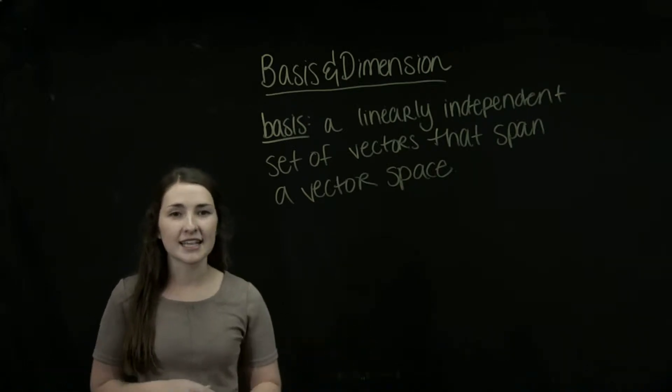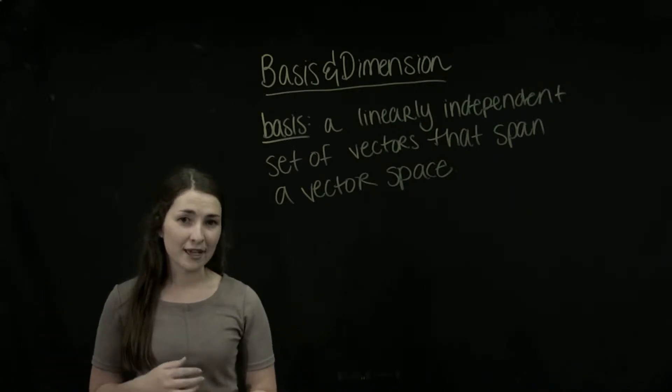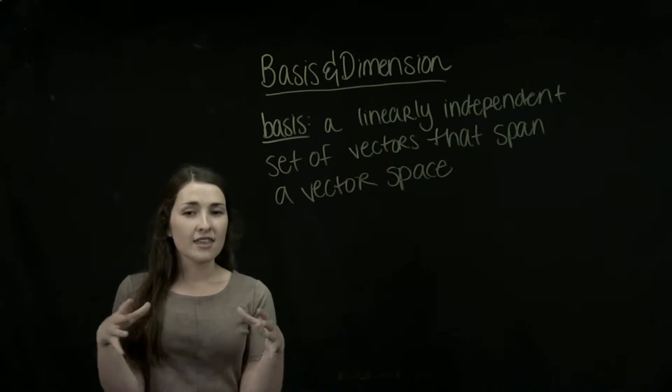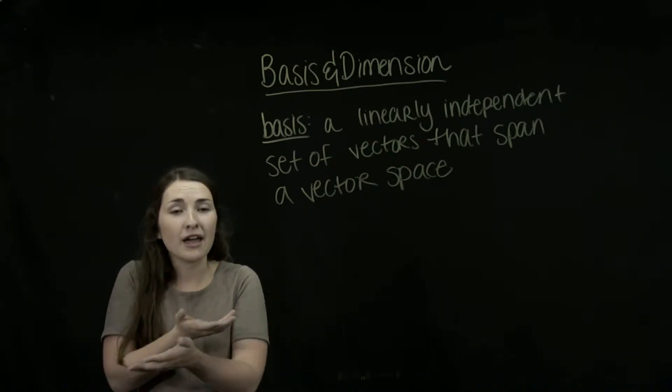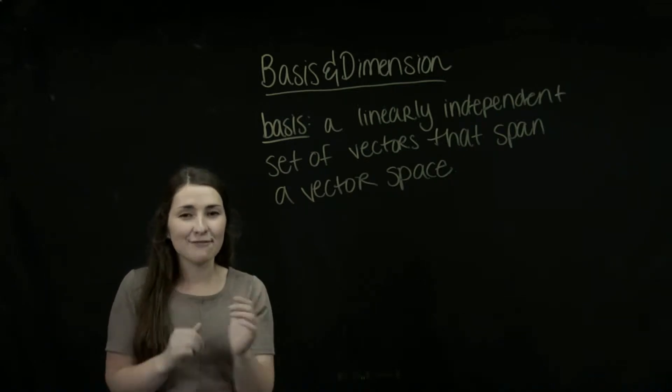So we can define a basis as a linearly independent set of vectors that span a vector space. That means that we have some set of vectors that together span the whole entire vector space, but it's the smallest set of vectors that do so.